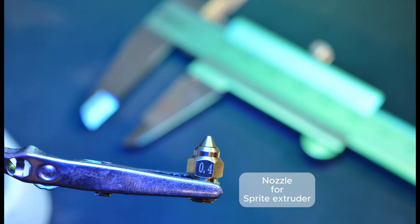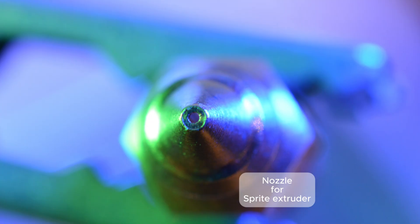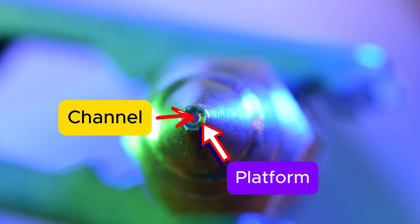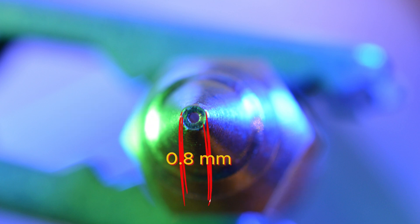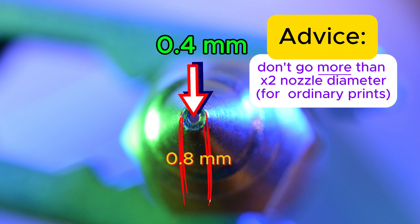As you know well, nozzle of 3D printer has a channel for extruding plastic through. It also has a platform, which is used for ironing and smoothing the extruded plastic. The bigger the platform, the wider the line to be extruded without quality issues. As you can see on this macro picture of Ender 3 nozzle, the platform is about 0.8 mm. That means it's recommended maximum line width for your everyday prints with plenty walls, infill and so on.